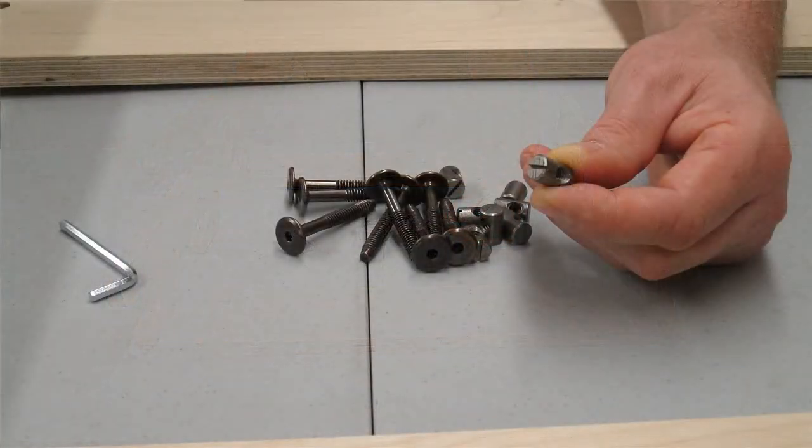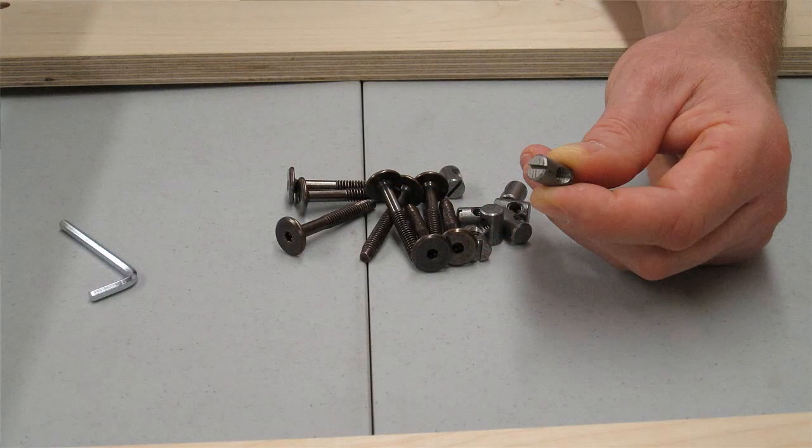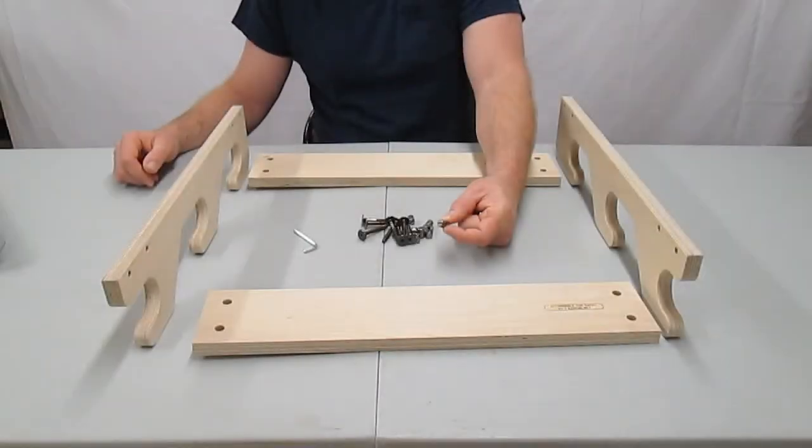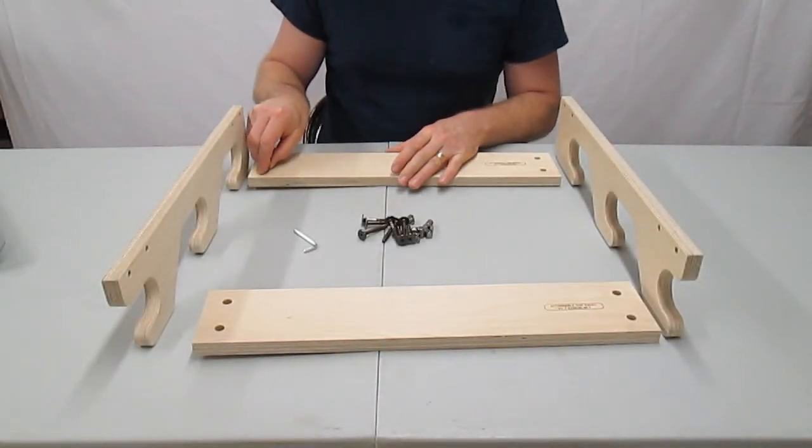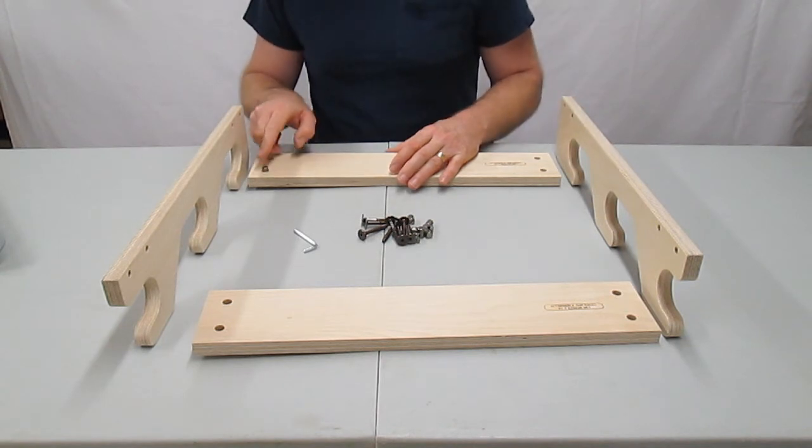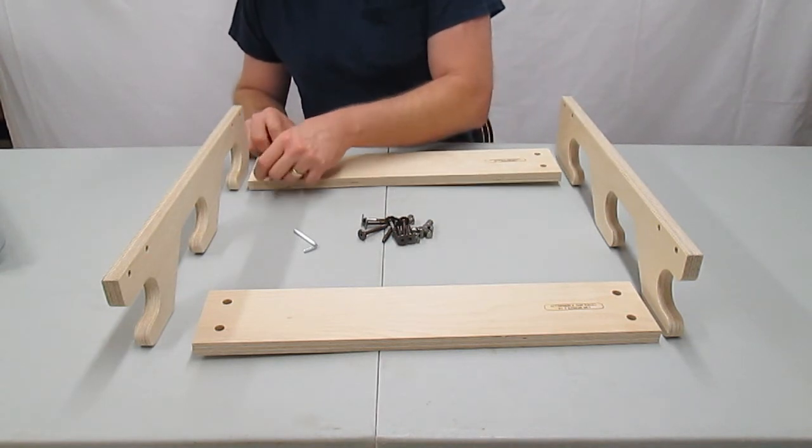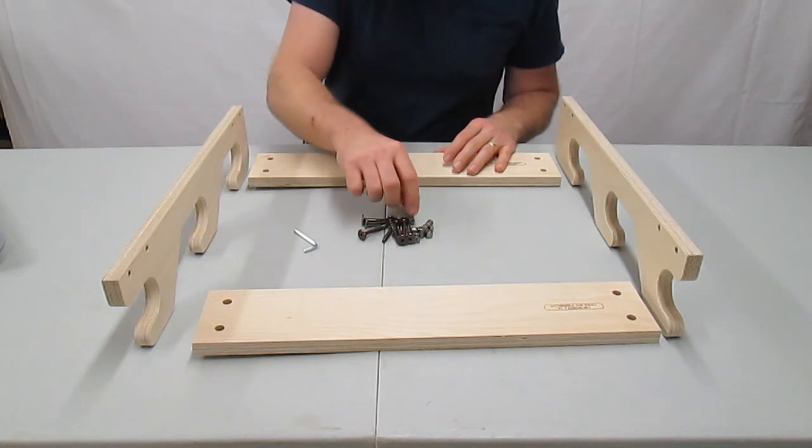The cross dowels have a slot in one end which lines up with the threaded hole. These slots should be visible when the cross dowels are placed in the holes in the back of the cross braces and are used to orient the cross dowels correctly with the screwdriver if necessary.